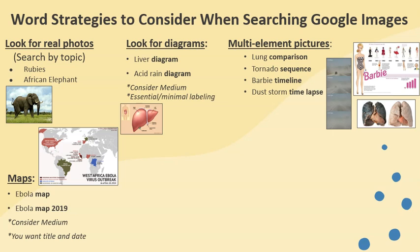Maps are good to communicate ideas. In the example shown, you see a West Africa Ebola virus outbreak map as of October 2014, found simply by searching Ebola map. If you want a more recent map, you can type in Ebola map 2019, but if there weren't many outbreaks in that year it might be better to just search Ebola map and find a variety of maps that indicate what year the data is from. Consider medium images and make sure there's a title and a date on your maps.